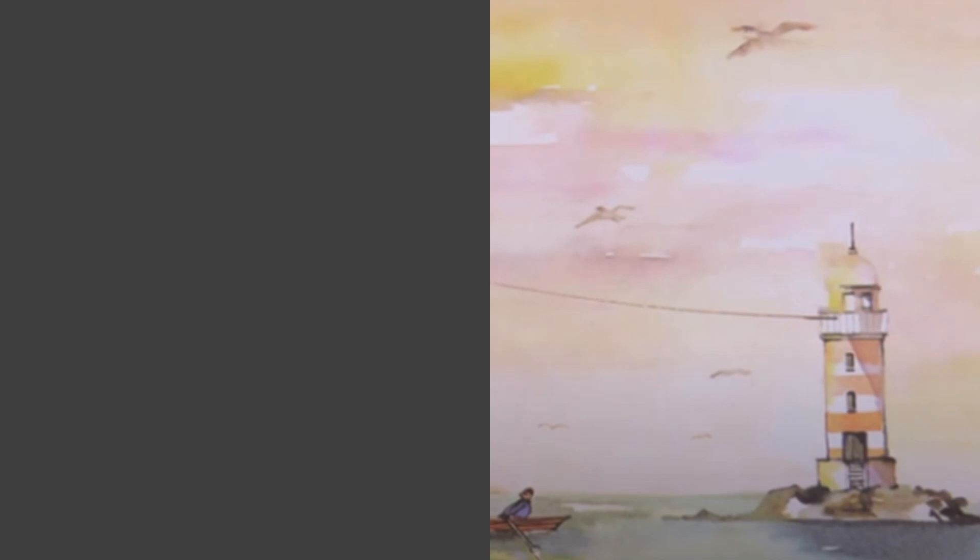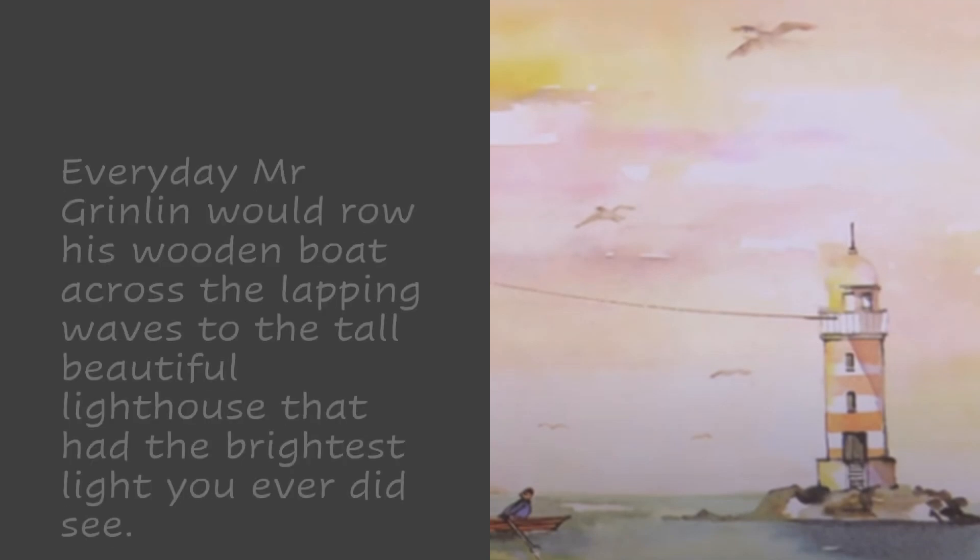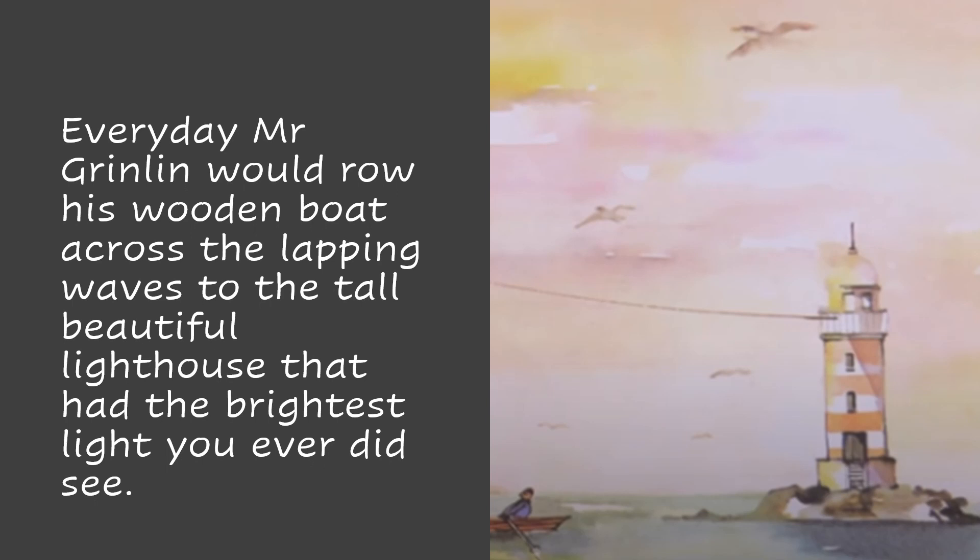So really importantly when you tell a story you need to follow a sequence. The next part could be what happens next — something like: 'Every day Mr Grinling would row his wooden boat across the lapping waves to the tall beautiful lighthouse that had the brightest light you ever did see.' So here we are talking about the next thing that happens, and we're also describing the scene again — where he is going.